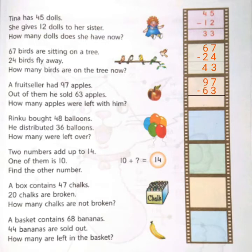So, 97 minus 63. At 1's place, we have 7 and 3. So, 7 minus 3 is 4. And at 10's place, we have 9 and 6. 9 minus 6 is 3. So, how many apples were left with him? 34 apples.